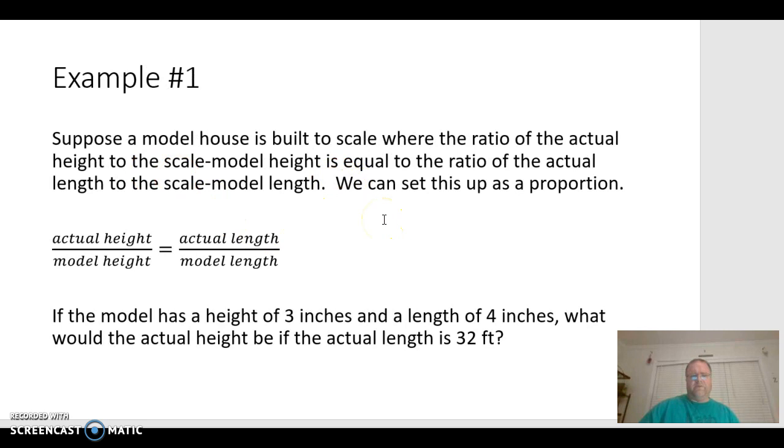Alright. So, let's look at an example of a direct proportion here. Let's say that you built a model house to scale. And what to scale means is that the ratios of all the dimensions are going to be the same. So, the ratio of the height of the model to the actual height is going to be equal to the model's length to the actual length. And all the measurements involved are going to be proportional as well. And that's a lot of times when architects, they'll set up some type of model building or house, something that they're doing. They'll often try to make that to scale.